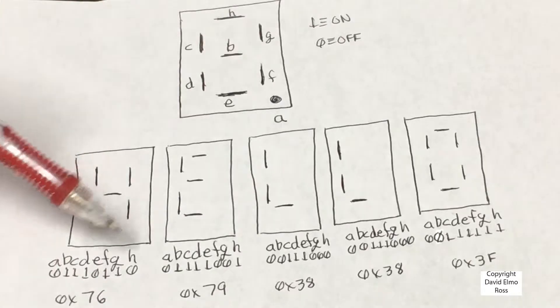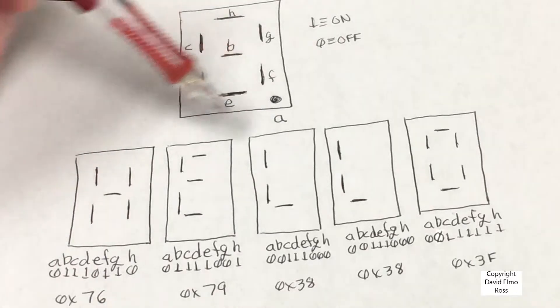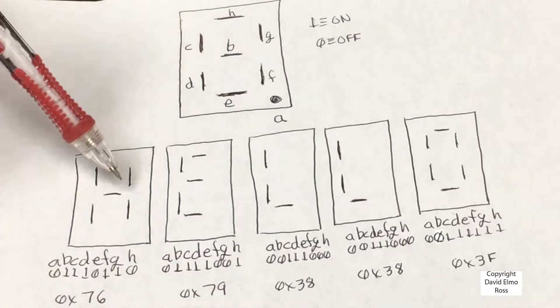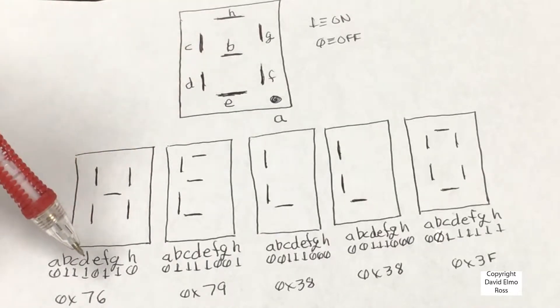So if we want to take a look at the H, the dot is off, so the A here is zero. But when we take a look at the rest of the letters, B is on, C is on, D is on,